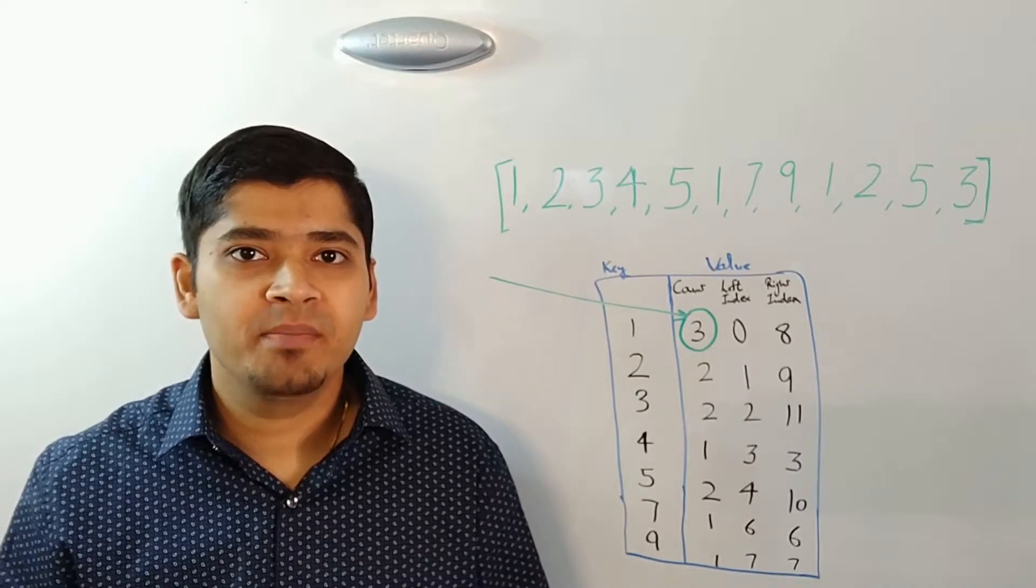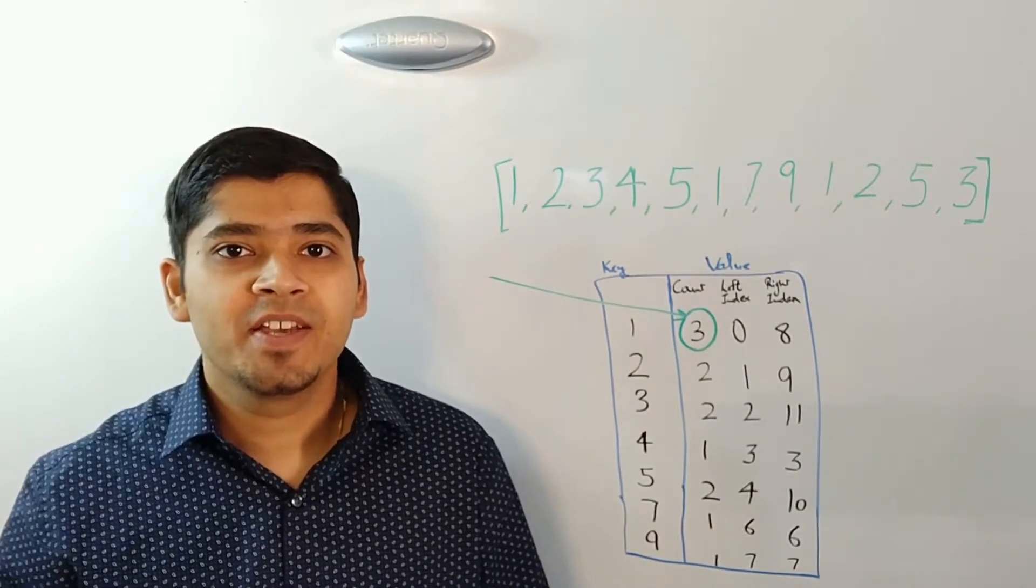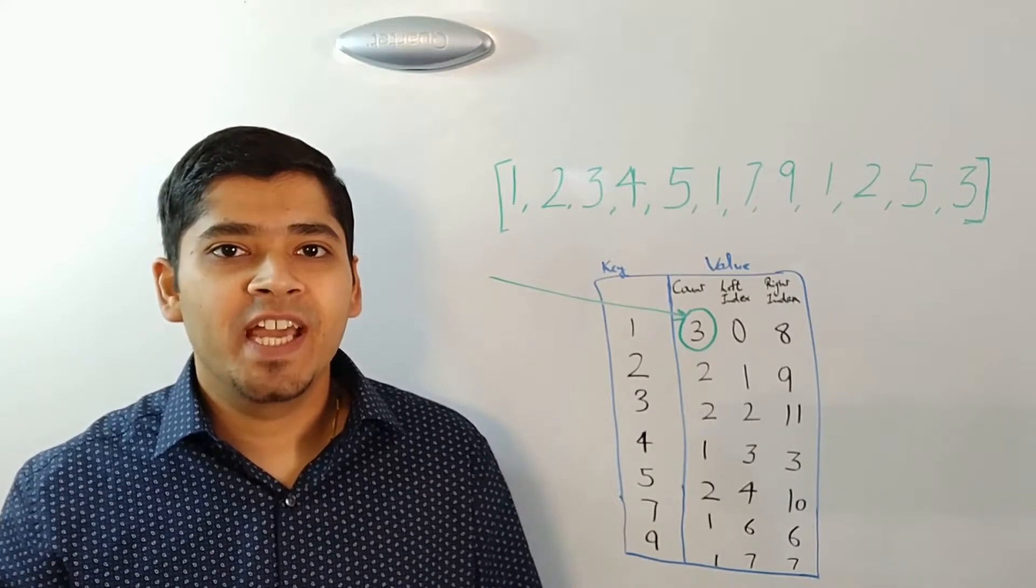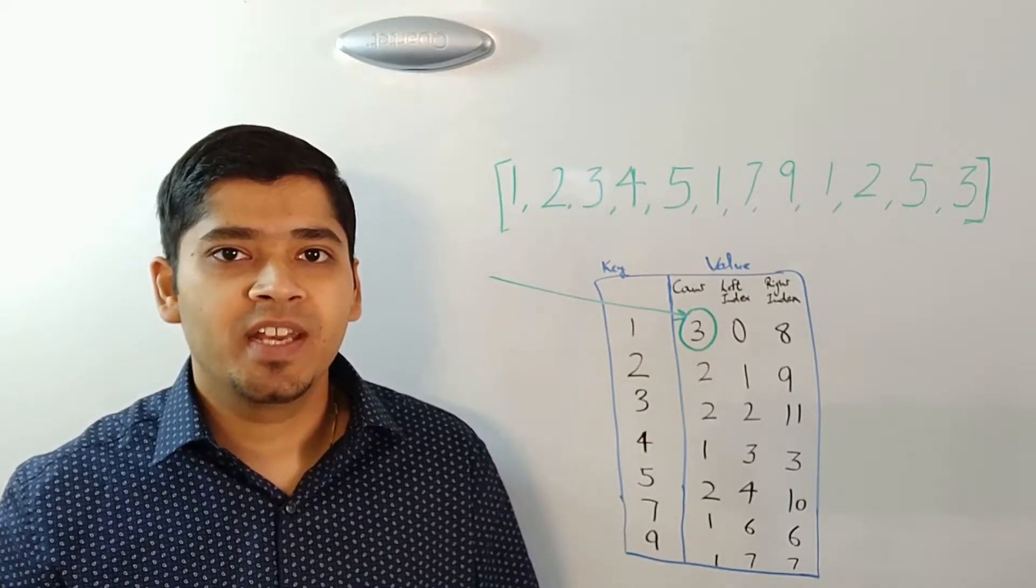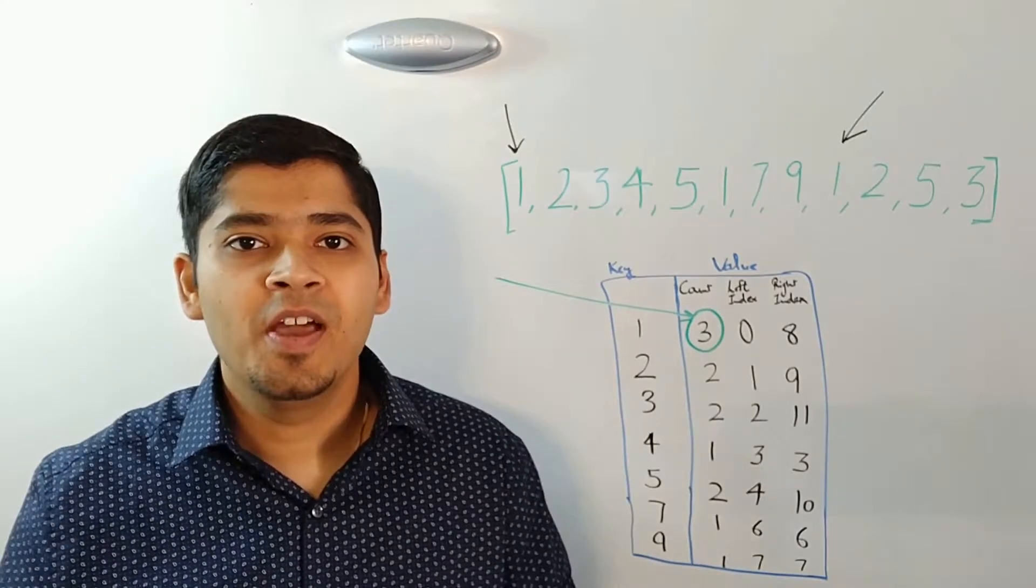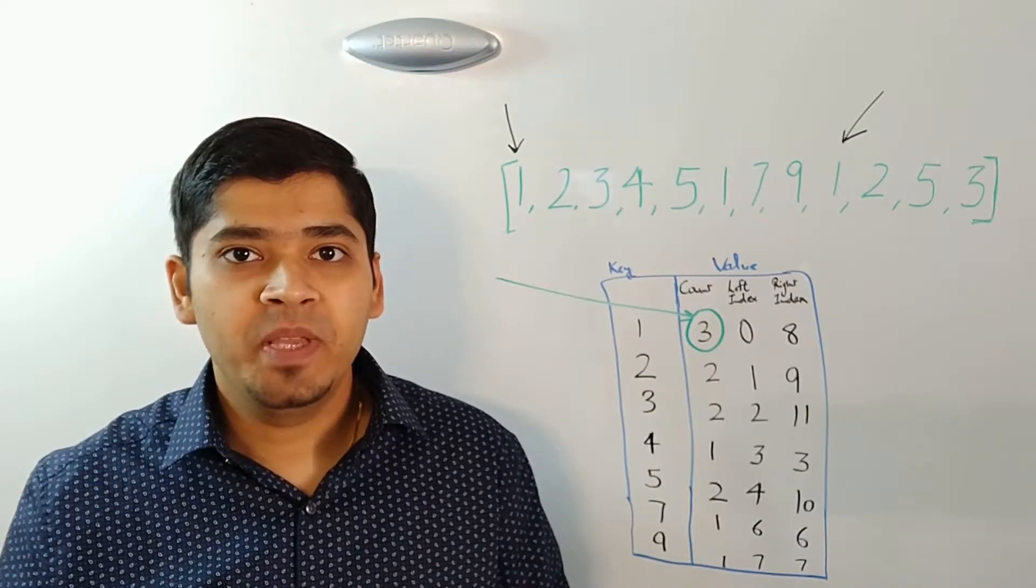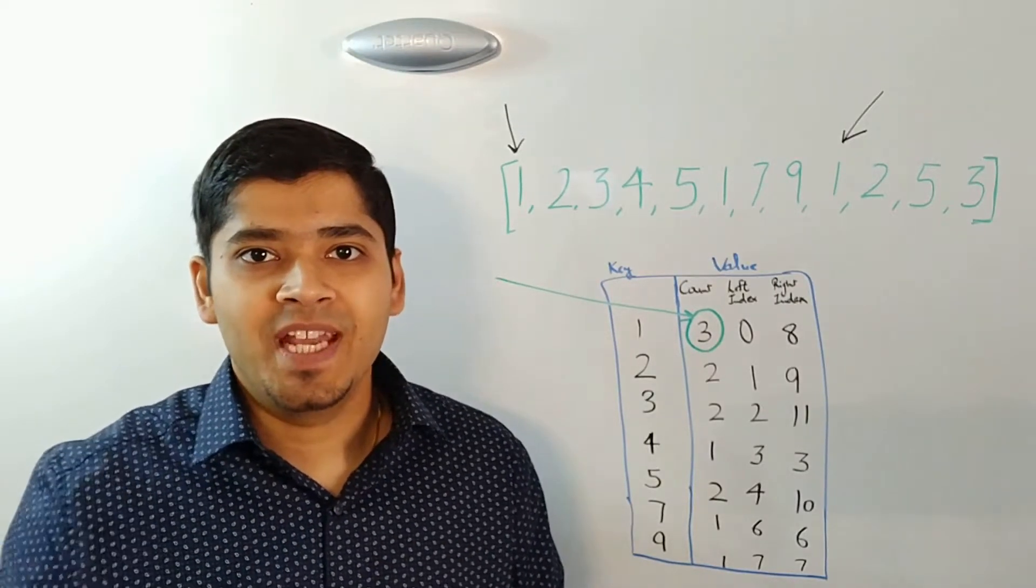As you can see in our sample array, the maximum count is 3. Next we can look at the left index and the right index associated which is 0 and 8 in our case. So the minimum sub array with the same degree will be from index 0 to index 8.